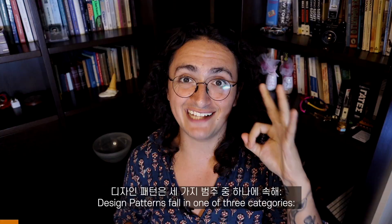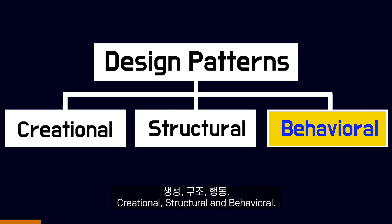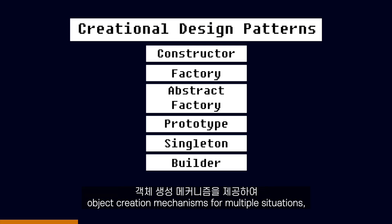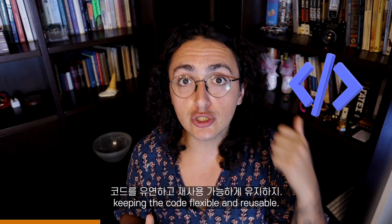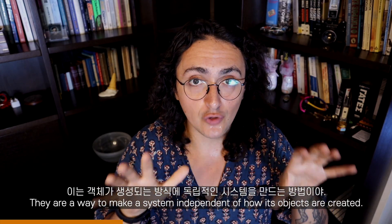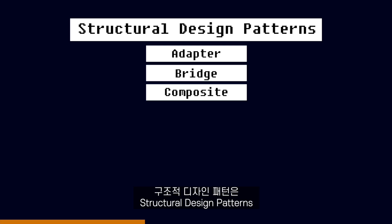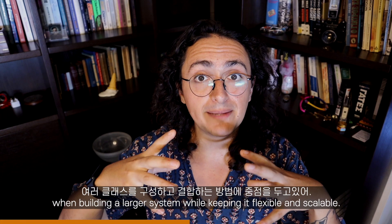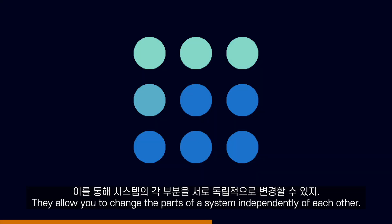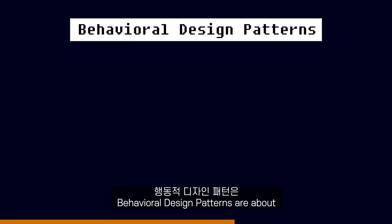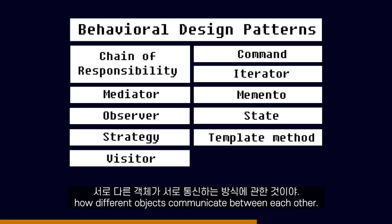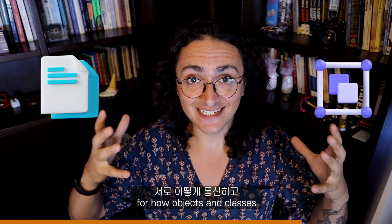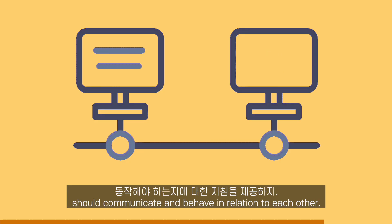Design patterns fall in one of three categories: creational, structural, and behavioral. Creational design patterns give us object creation mechanisms for multiple situations, keeping the code flexible and reusable — they make a system independent of how its objects are created. Structural design patterns focus on how we organize and combine multiple classes when building a larger system, while keeping it flexible and scalable, allowing you to change parts of a system independently. Behavioral design patterns are about how different objects communicate between each other.